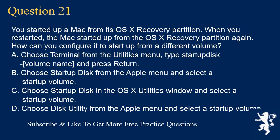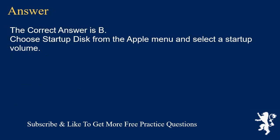Question 21. You started up a Mac from its OSX recovery partition. When you restarted, the Mac started up from the OSX recovery partition again. How can you configure it to start up from a different volume? A. Choose Terminal from the Utilities menu, type startup disk volume name, and press return. B. Choose Startup Disk from the Apple menu and select a startup volume. C. Choose Startup Disk in the OSX Utilities window and select a startup volume. D. Choose Disk Utility from the Apple menu and select a startup volume. The correct answer is B: Choose Startup Disk from the Apple menu and select a startup volume.